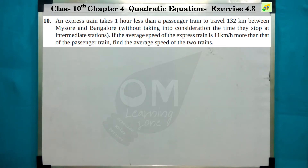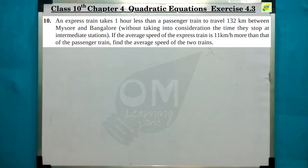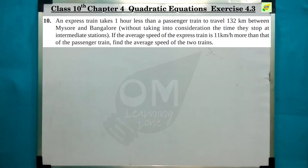An express train takes 1 hour less than a passenger train to travel 132 km between Mysore and Bangalore, without taking into consideration the time they stop at intermediate stations. If the average speed of the express train is 11 km per hour more than that of the passenger train, find the average speed of the two trains. The distance is 132 km.